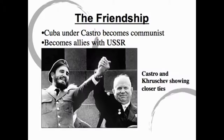But by the 1960s he had set up a communist dictatorship and had become allies with the Soviet Union. That did not sit well with the United States, because Americans feared the Soviet Union would use Cuba as a base to attack the United States and start spreading communism in Latin America. You need to remember that Cuba is very close to the United States — only 90 miles off the coast of Florida.